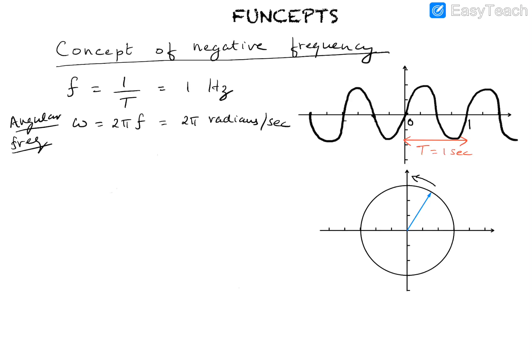Today our focus is going to be on the negative frequency. Instead of f being one hertz, if we have f equals minus one hertz, how do we visualize this in terms of the phasor? In reality we cannot produce any waveform which has negative frequency, so it is not physical but more of a mathematical representation. As we will see later in future videos, this mathematical representation is introduced as a convenience from the fact that we have a complex exponential to represent sinusoids.